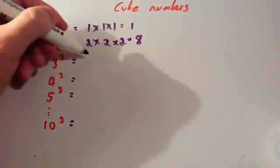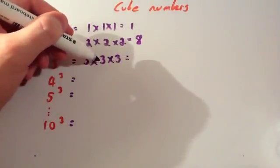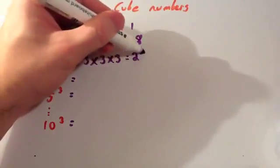3 cubed, well that's 3 times 3 times 3. 3 times 3 is 9, times 3 is 27.